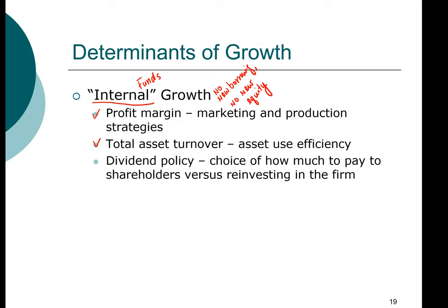The third driver is dividend policy — how much money will the company pay out to stockholders versus reinvesting in the firm. The less the company pays out, the more it reinvests, and therefore the more funds will be available for growth. Those are the three factors that determine the internal growth capacity of a company.